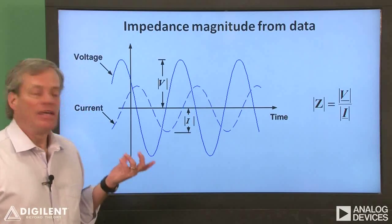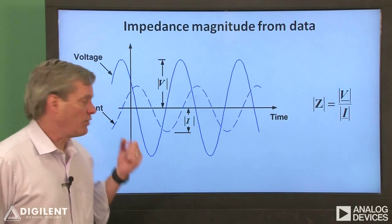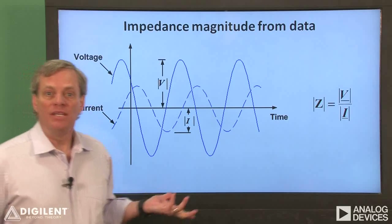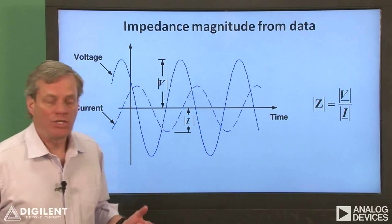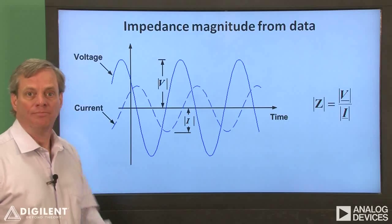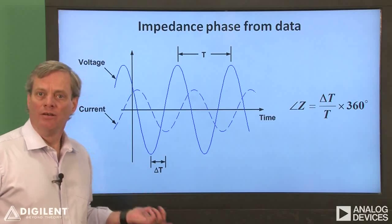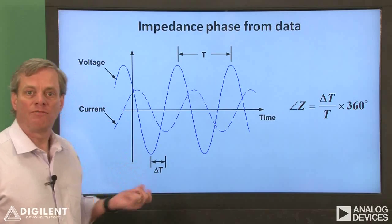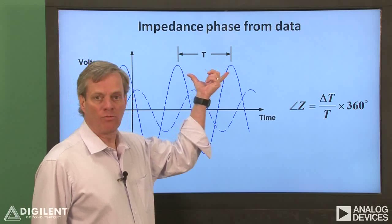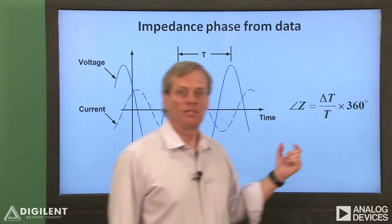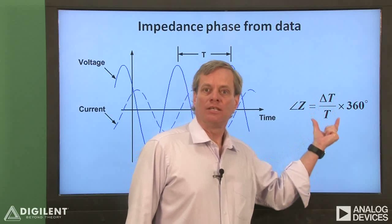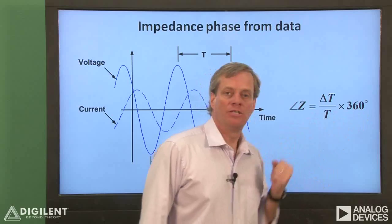For example, if this is the voltage sinusoid and this is the corresponding current, the impedance magnitude is just the ratio of the magnitude of the voltage to the current sinusoid. Similarly, for these voltage and current waveforms, if the time delay between the two is delta T and the period of both waveforms is capital T, the impedance phase is simply the ratio of delta T to capital T multiplied by 360 degrees.